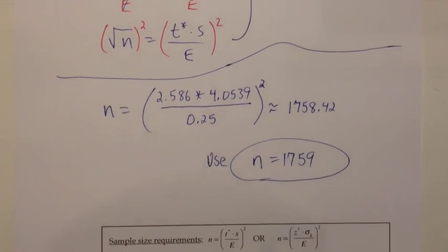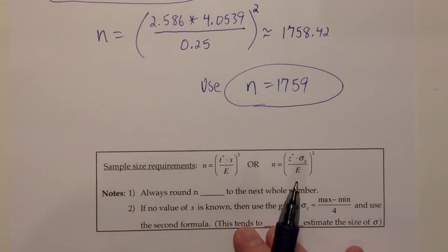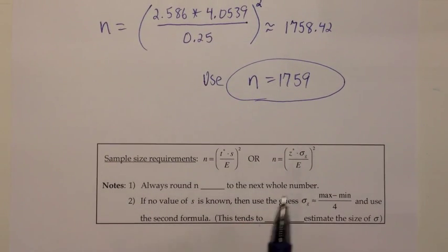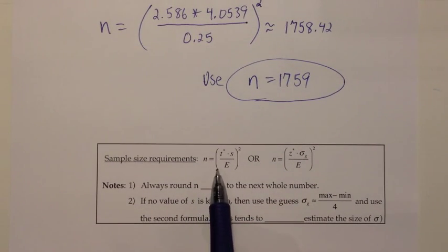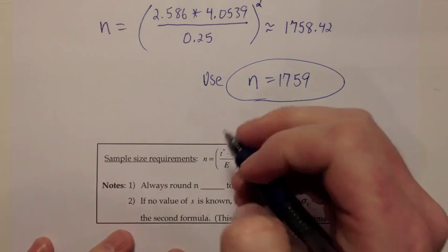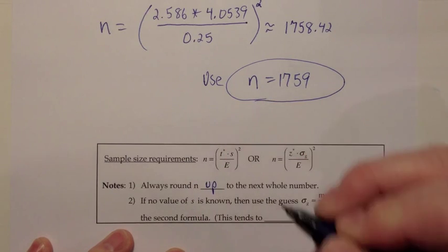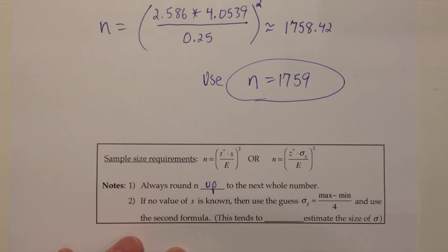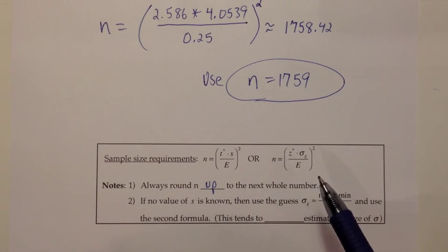Let's make a few notes on that. One of them would be that the formula that we just used for sample size is that N equals T-star times S over E all squared. And that you should always round N up to the next whole number. Even if it would be closer to round down, we always round up in this scenario. That takes care of what we just did in our example.